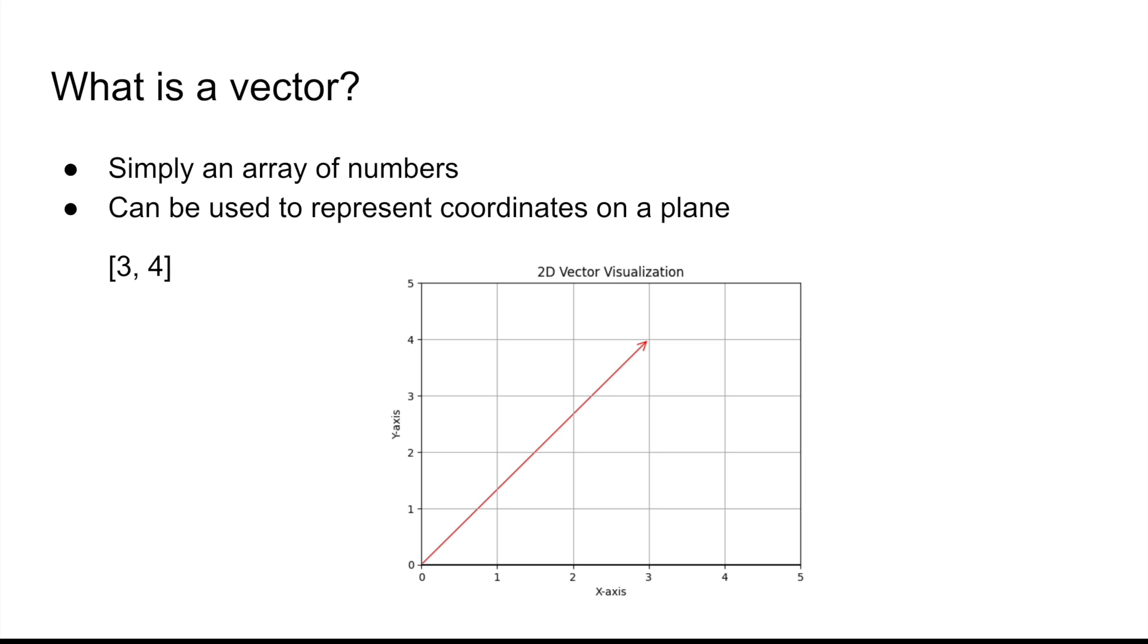Let me start off the discussion by sharing some light on what a vector is. Simply put, a vector is nothing else but an array of numbers. It can be basically used to represent coordinates on a plane. So say for example I have a vector denoted by the numbers 3, 4. In the list that you see right now you have two numbers, which is where I require two axis to represent this particular vector.